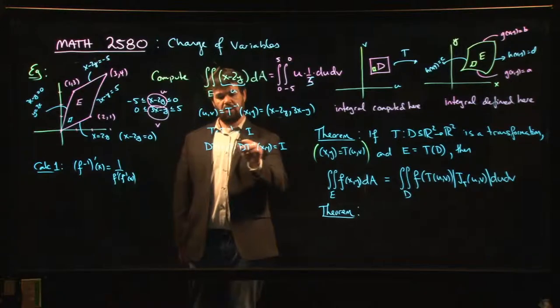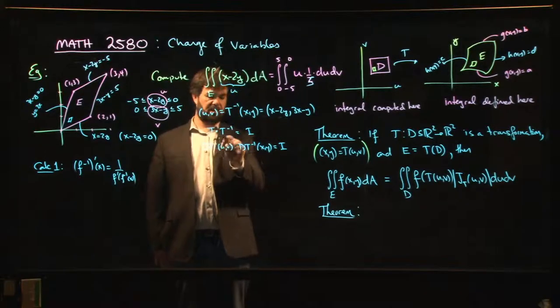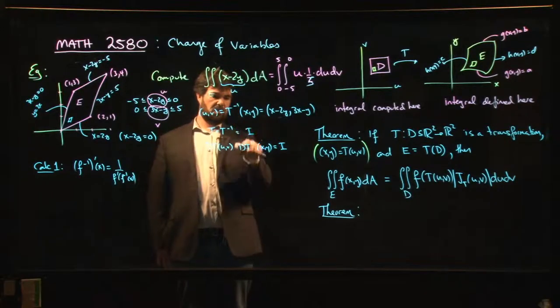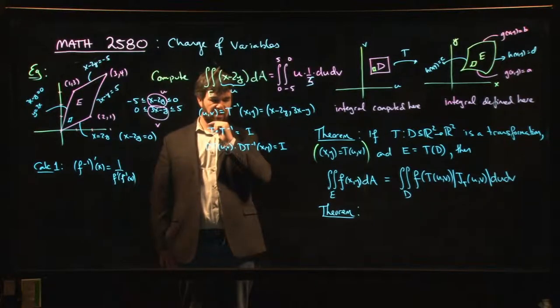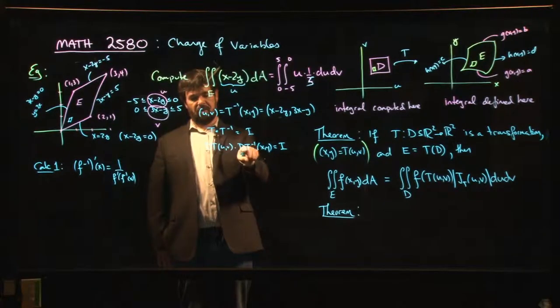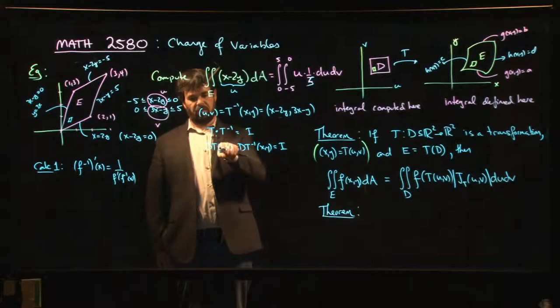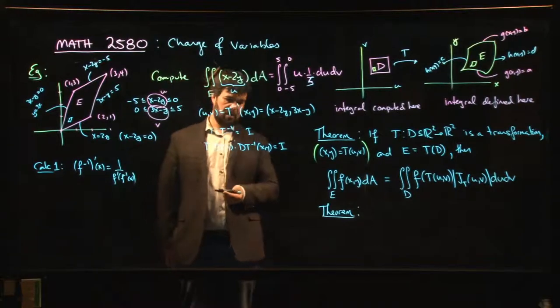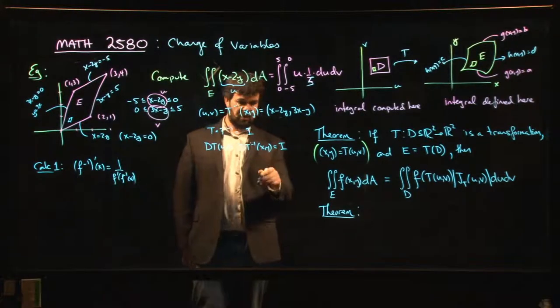Aha, what do you get if you take the determinant of both sides? What this says is that the derivative of the inverse function is the inverse of the derivative, if you like. That, as a matrix, the derivative of T inverse is just the inverse of the derivative of T.